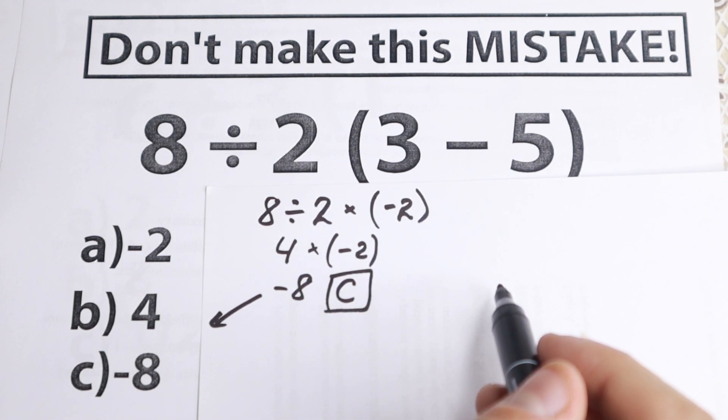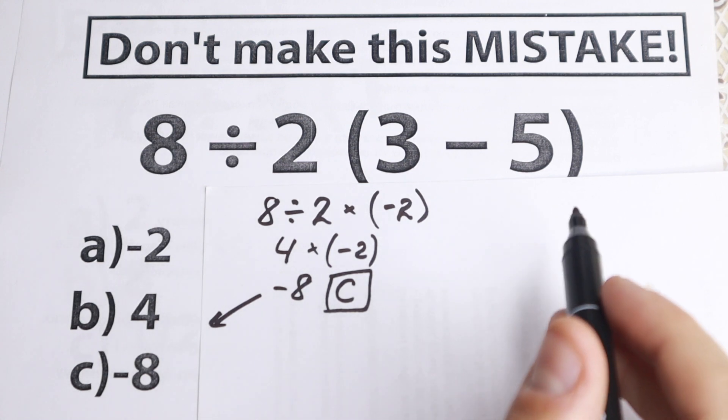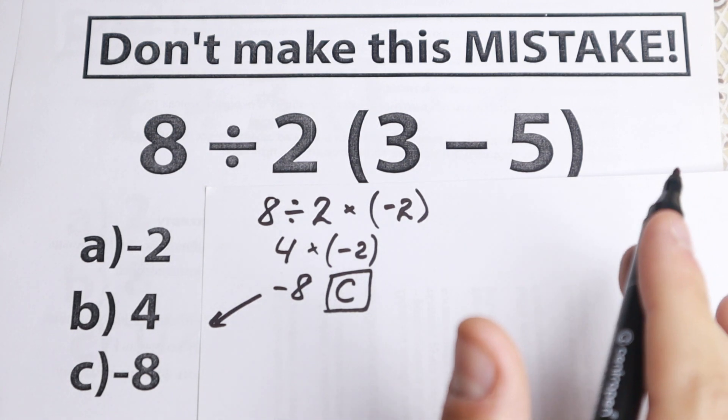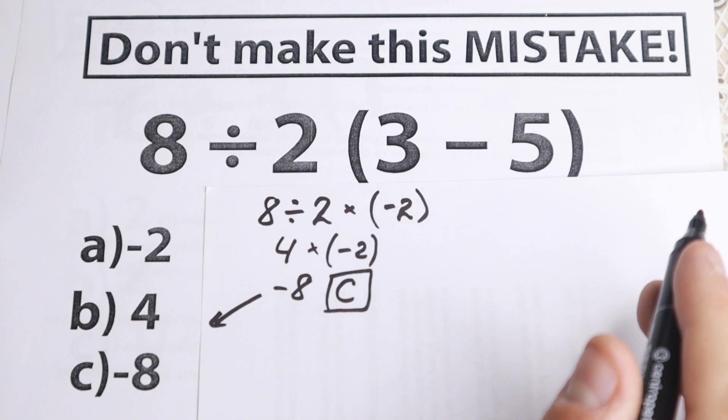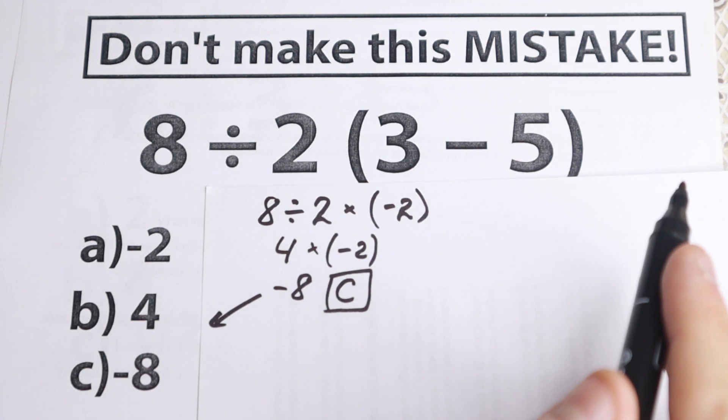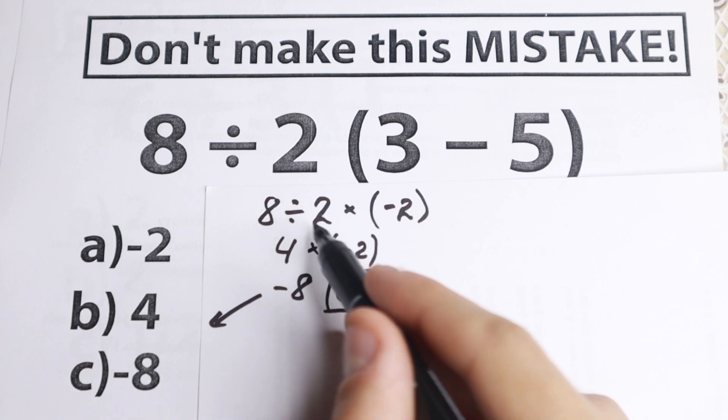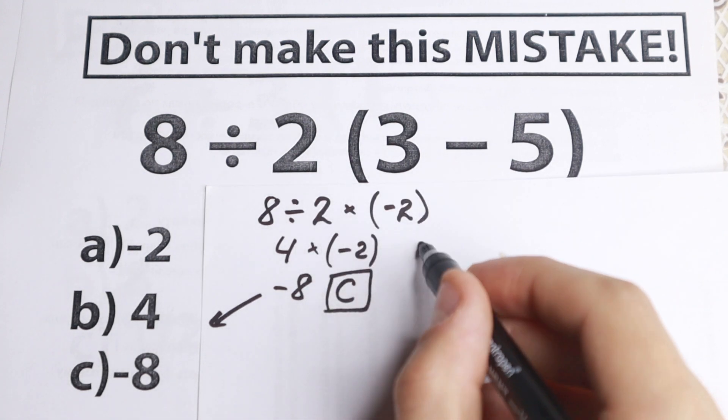But I want to show you a really good second method. So some people have a different interpretation. And while it's not the correct answer today, it would have been regarded as the correct answer 100 years ago. So some people may have learned this other interpretation more recently too. But this is not the way calculators would evaluate the expression today. So if we have this expression, I write it right here, so this is our first method.